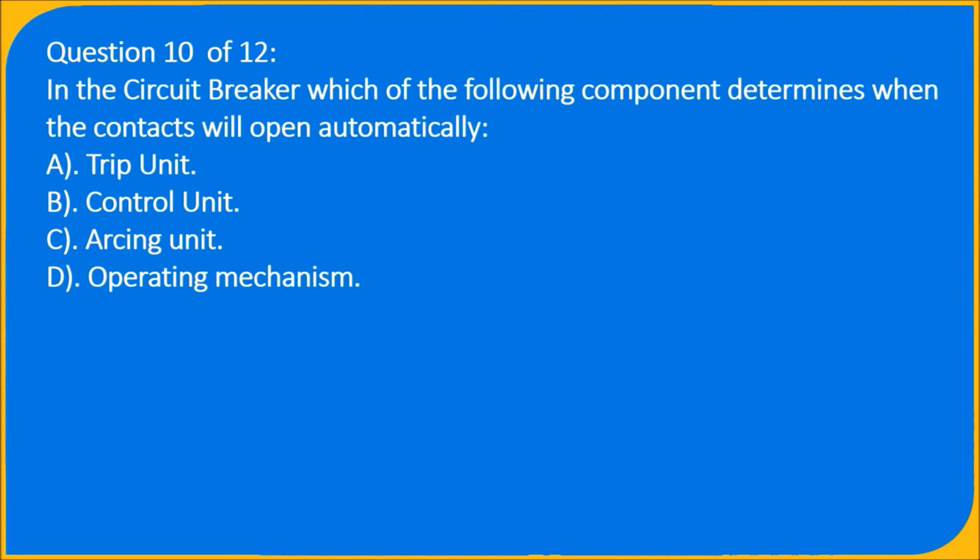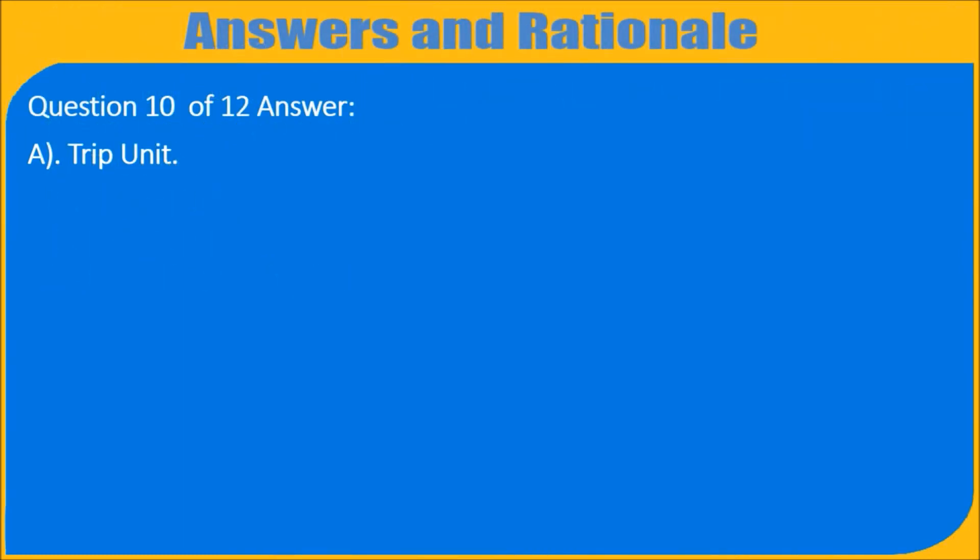Question 10 of 12: In the circuit breaker, which of the following component determines when the contacts will open automatically? A) Trip unit, B) Control unit, C) Arcing unit, D) Operating mechanism. Question 10 of 12 answer: A) Trip unit.